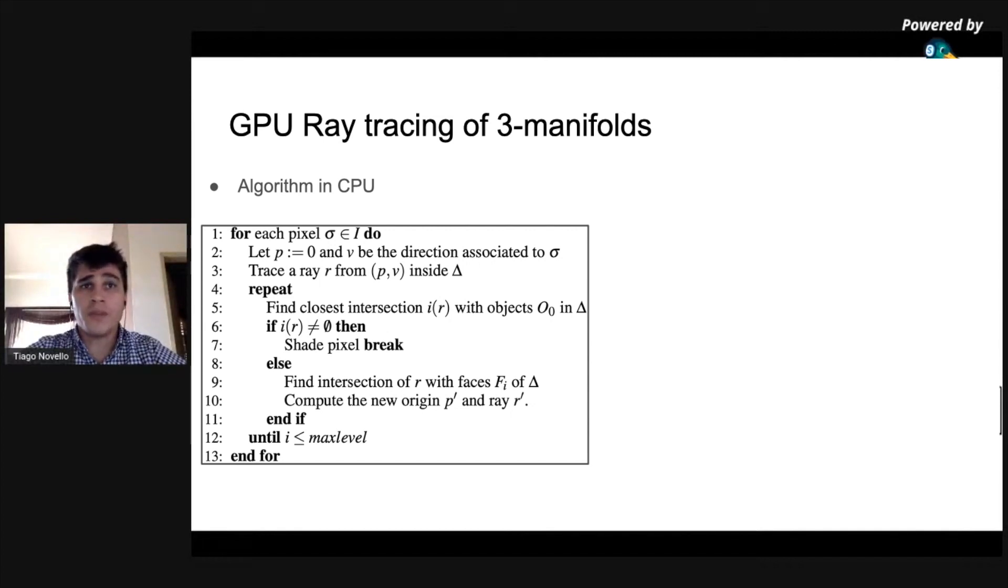In the case of ray tracing inside the geometric manifold, we need the extra steps to guide the path of a ray as it exits and enters the fundamental domain. This corresponds to lines nine, ten and twelve.